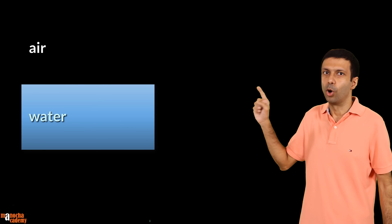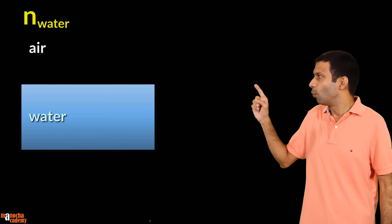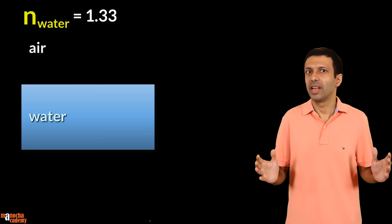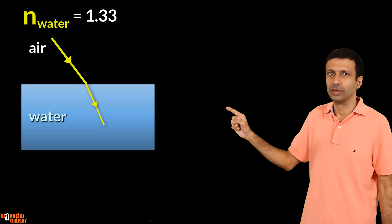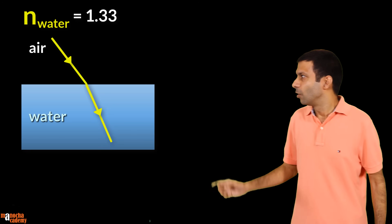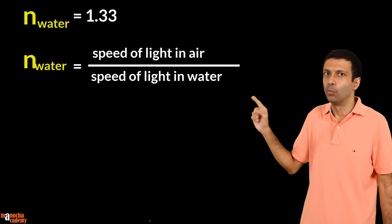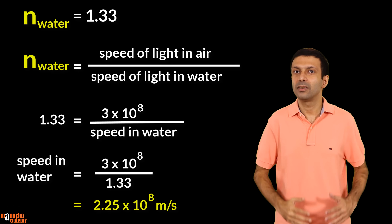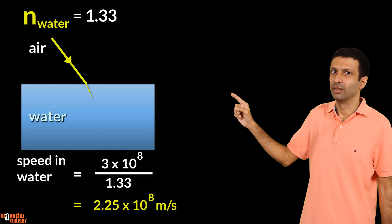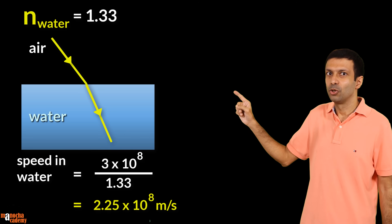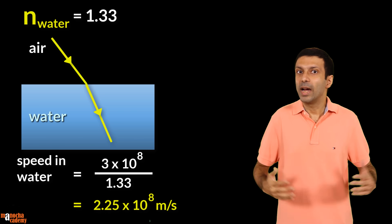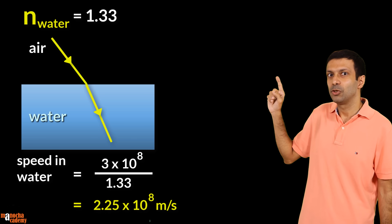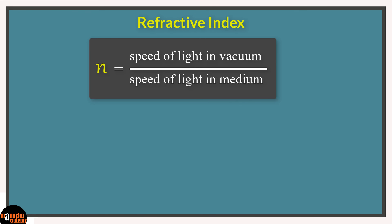Next let's consider the example of water. We are given the refractive index of water as 1.33 and we want to calculate the speed of light in water. So light is traveling from air to water. Using the refractive index formula — refractive index of water equals speed of light in air divided by speed of light in water — and substituting the values, we get the speed of light in water as 2.25 × 10⁸ meter per second. So light slows down when it enters water, from 3 × 10⁸ to 2.25 × 10⁸ meter per second, because water is a denser medium compared to air. Let's place this formula of refractive index on our concept board.